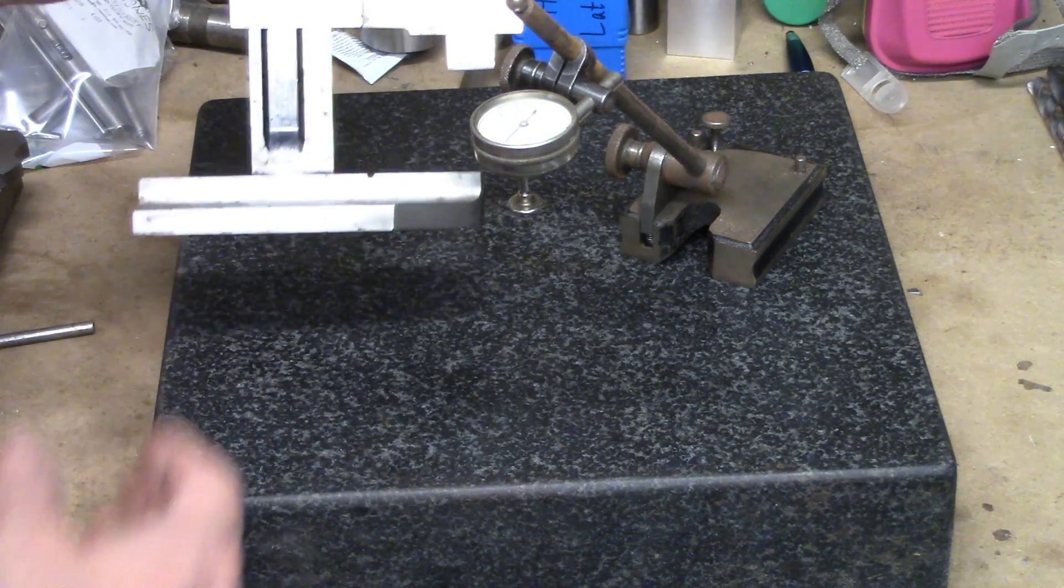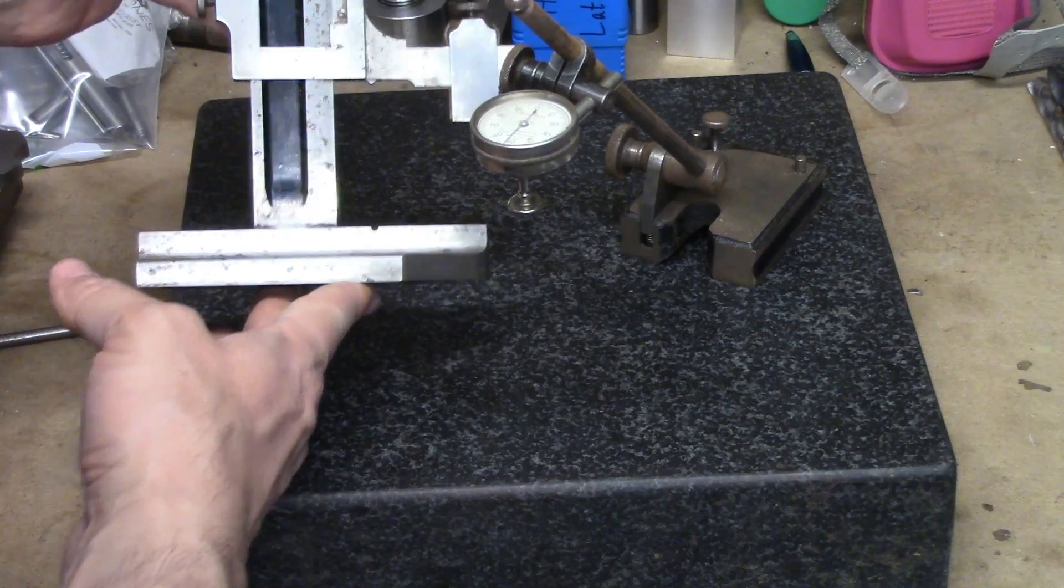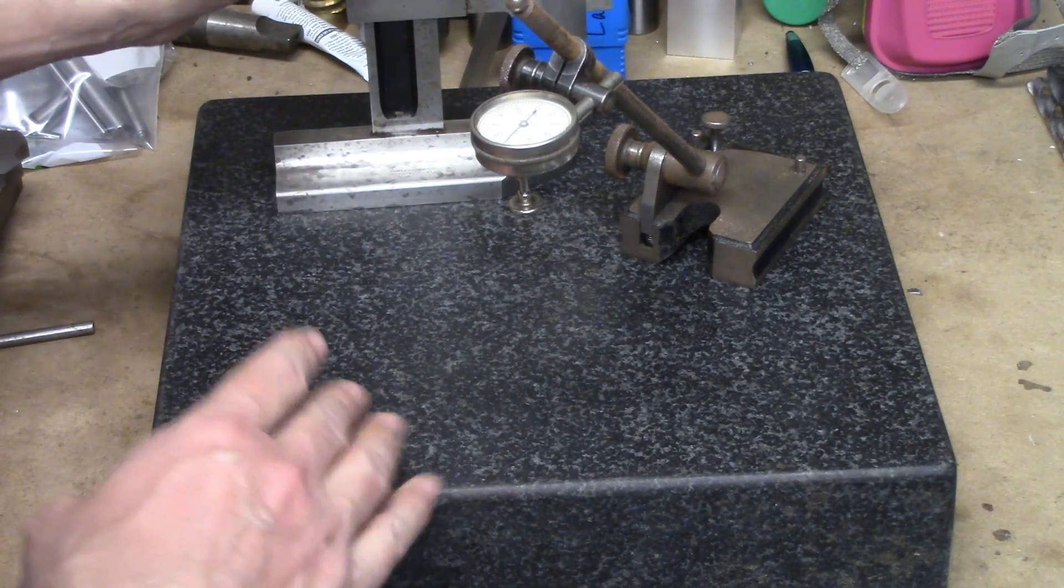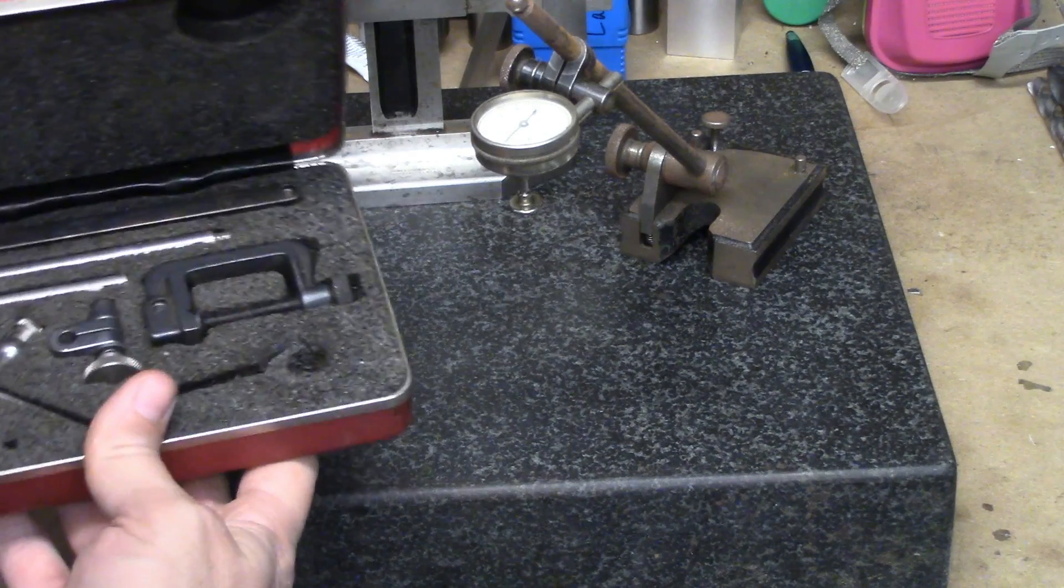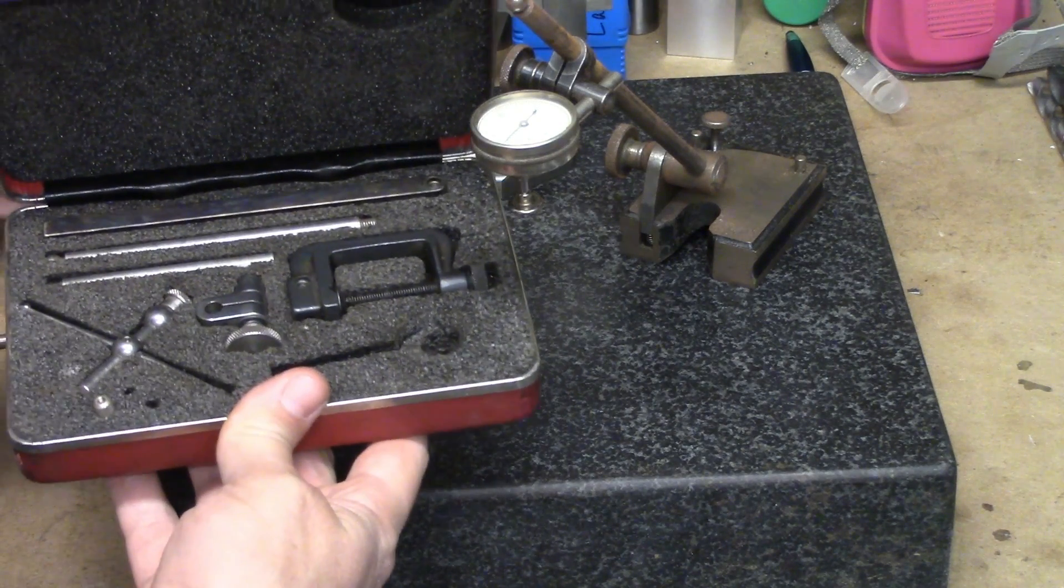Likewise, there are plenty of mounting options for the height gauge. Some indicators, like this Starrett 196, come with a variety of accessories to mount it to surface gauges and height gauges.